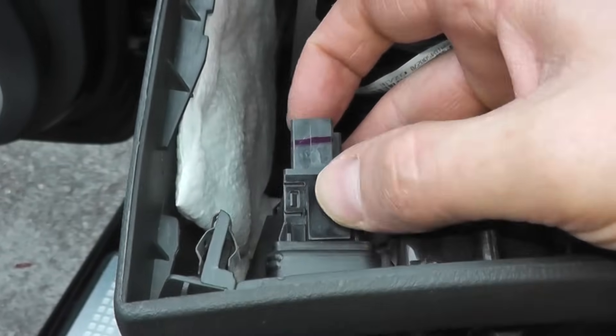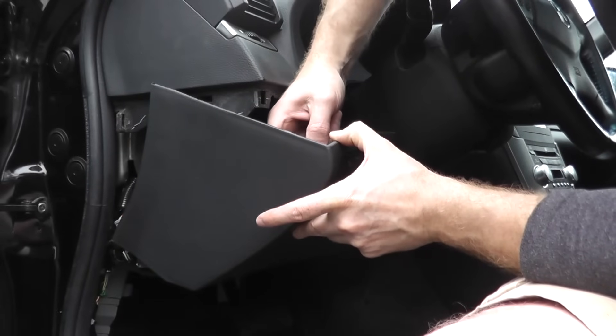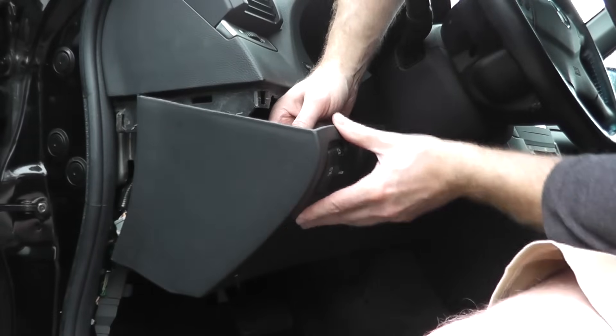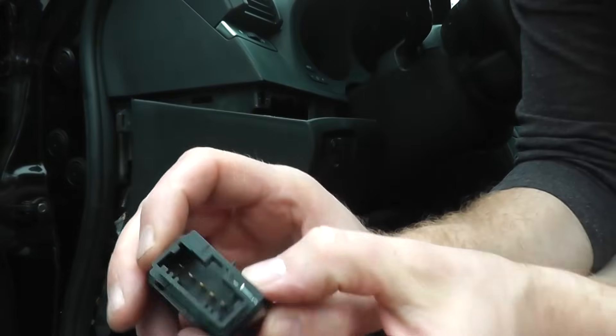And then you want to squeeze in these tabs at the 12 and the 6 o'clock position and then pull the switch out. I can't do it with one hand, so let me put the camera back down. So again, I'm just squeezing in those tabs at the 12 and the 6 o'clock and push out.